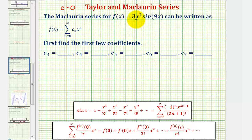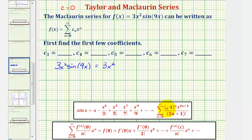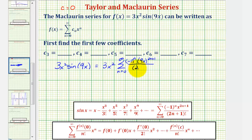So now to build the Maclaurin series for our function, to find the power series for sine 9x we substitute 9x for x, and then multiply that power series by the polynomial factor of 3x squared. So we can say that 3x² sin(9x) equals 3x² times the summation from n equals 0 to infinity of negative 1 to the nth, times 9x raised to the power of 2n plus 1, divided by 2n plus 1 factorial.